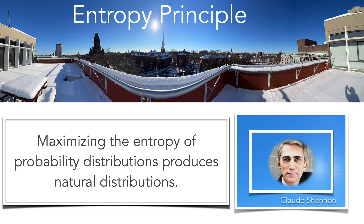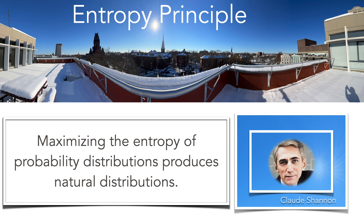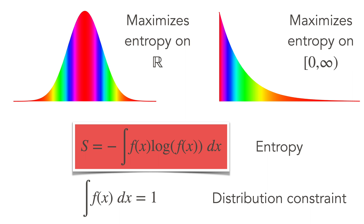A very important principle in nature and probability theory is the entropy principle: maximizing the entropy of probability distributions allows you to derive natural distributions. Claude Shannon first defined entropy in information theory. In the continuum, the distribution on the real line that maximizes entropy is the normal distribution — the Gaussian. The distribution on the positive real axis that maximizes entropy is the exponential distribution. These are Lagrange optimization problems in infinite dimensions.